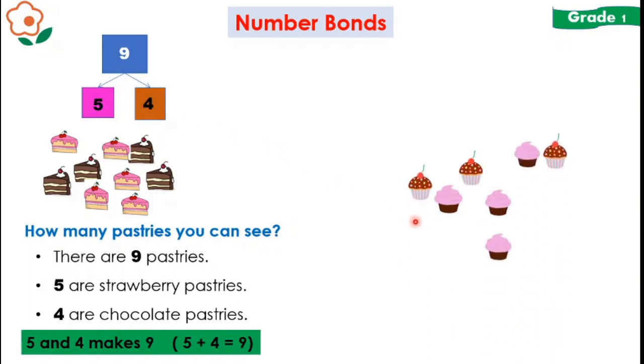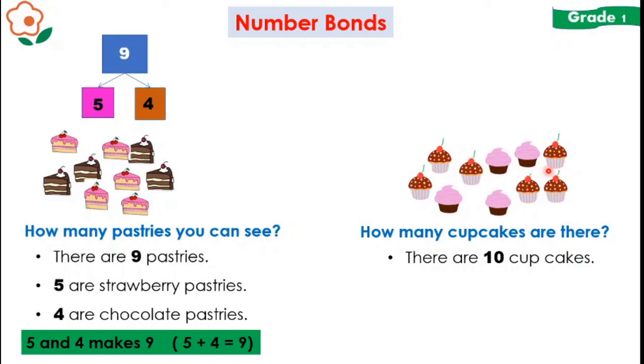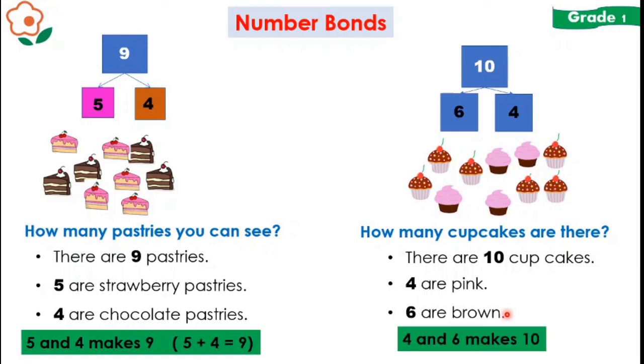So here you can see some cupcakes. 10 cupcakes. There are 10 cupcakes. Among them, 4 are pink, 6 are brown. So you can break 10 cupcakes into 6 and 4 because there are 6 brown and 4 pink. You can also write it as 4 and 6 makes 10 or 6 and 4 makes 10.